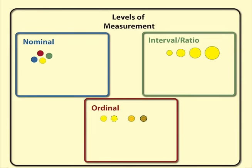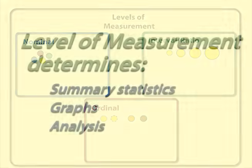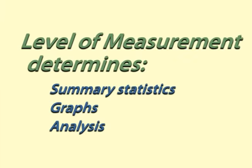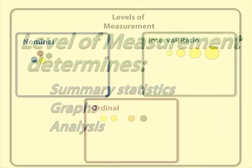Level of measurement. The level of measurement used for a variable determines which summary statistics, graphs, and analyses are possible and sensible.